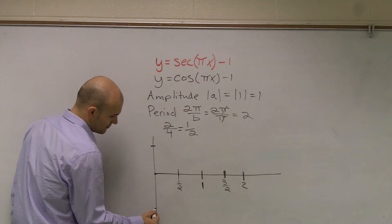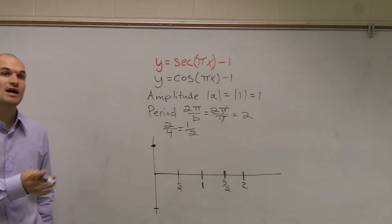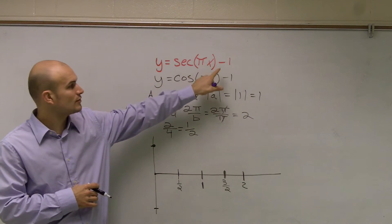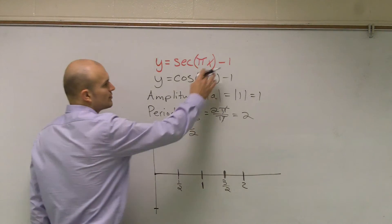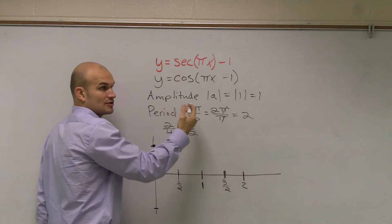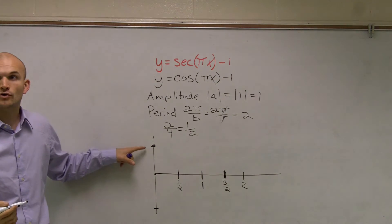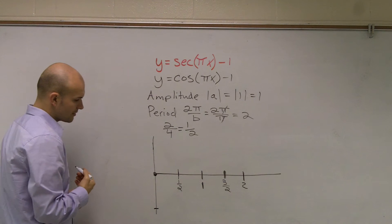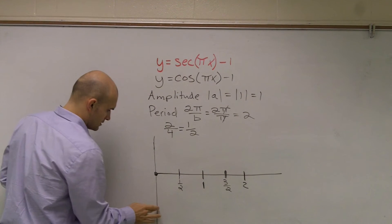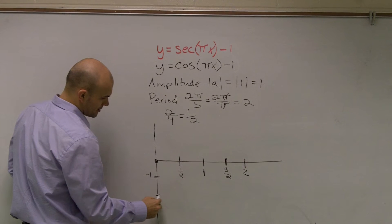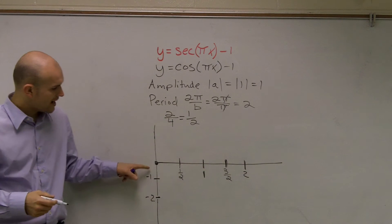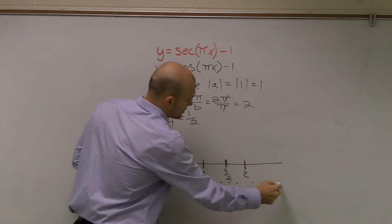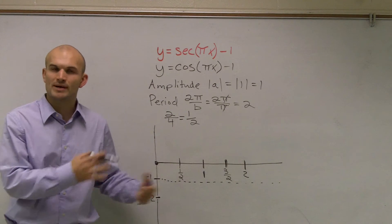On a cosine graph, we would normally start up at the maximum. We know a cosine graph without any transformations crosses at (0, 1) when it has an amplitude of 1. However, the minus 1 outside the function tells you to shift the whole graph down 1 — it's a vertical shift downward, not a horizontal shift. So instead of starting up at y = 1, I'm now going to start down at y = 0. Let's label negative 1 and negative 2 on the y-axis. So y = -1 is going to act kind of like our new midline, and I'll draw a dotted line there to help me as I graph.